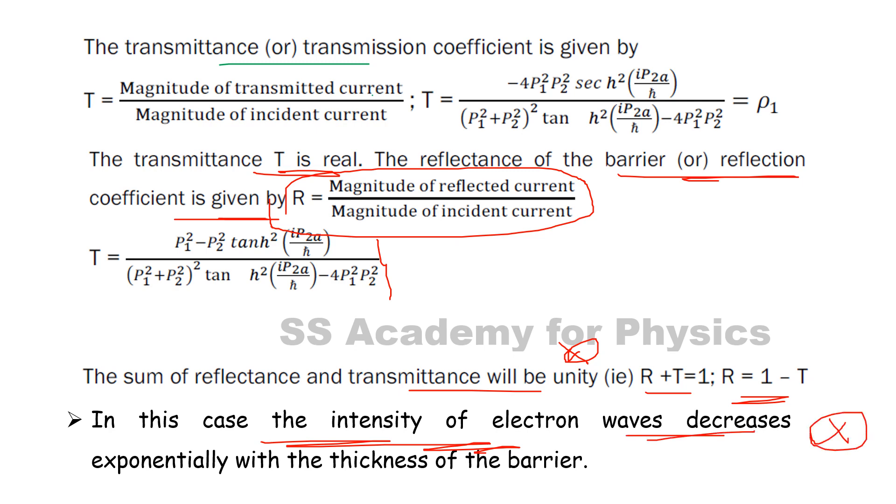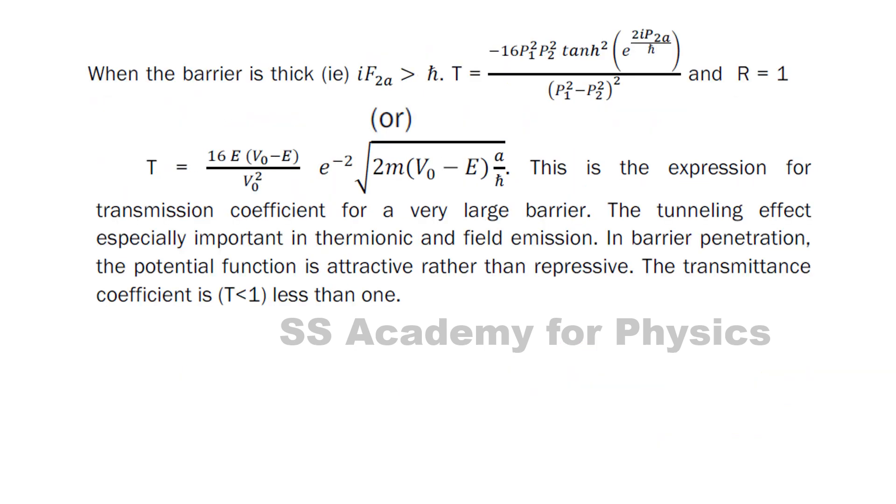The intensity decreases exponentially with the thickness of the barrier. When the barrier is thick, f²a is greater than ℏ, meaning T approximately equals R equals one. This is the expression for transmission coefficient for a very large barrier. The tunneling effect is especially important in thermionic and field emission.